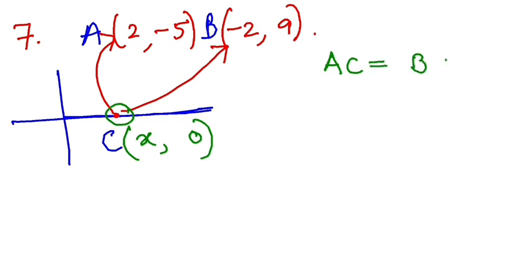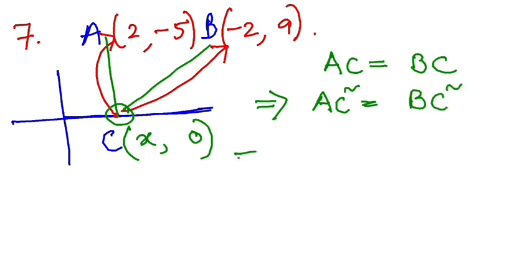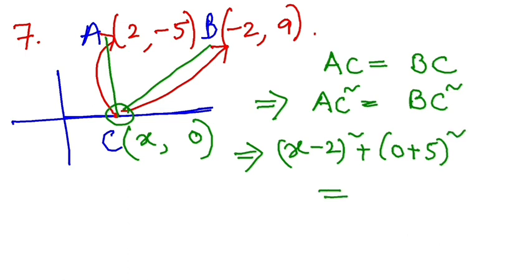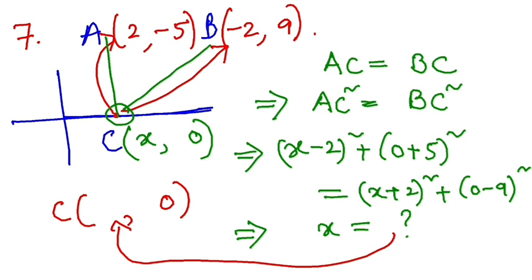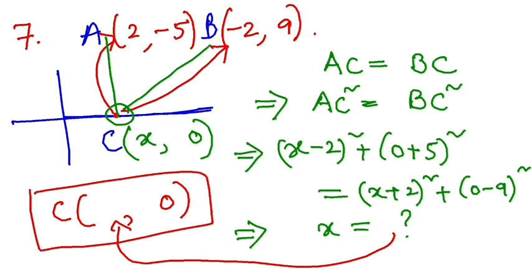Since C is equidistant from A and B, I can write AC equal to BC. I can square both sides: AC squared equals BC squared. Applying the distance formula, it will be (x minus 2) whole square plus (0 plus 5) whole square equals (x plus 2) whole square plus (0 minus 9) whole square. From this expression you can easily find the value of x, and then write the coordinates of point C. That is how you solve Question Number 7.